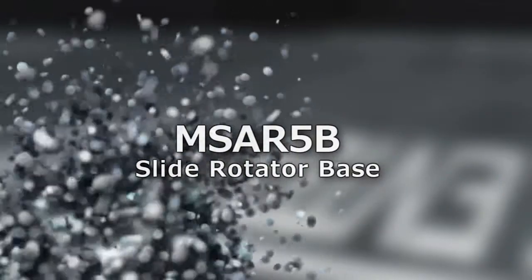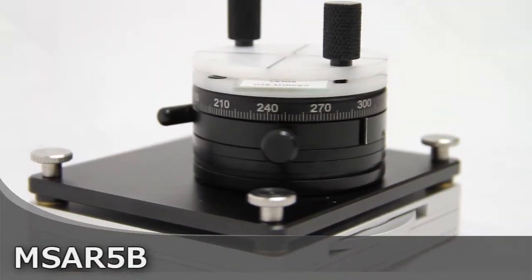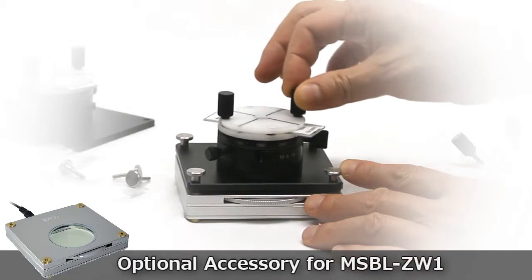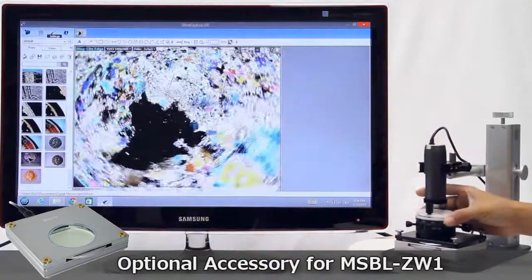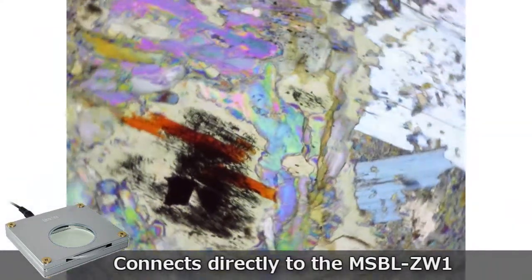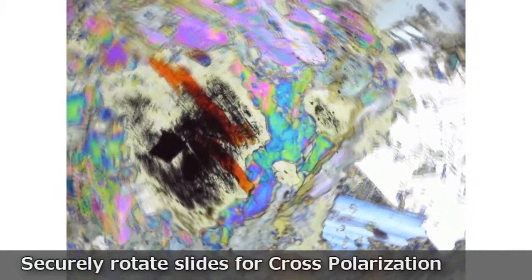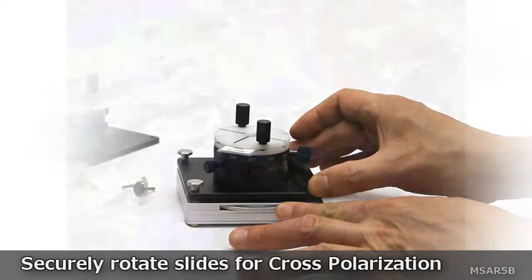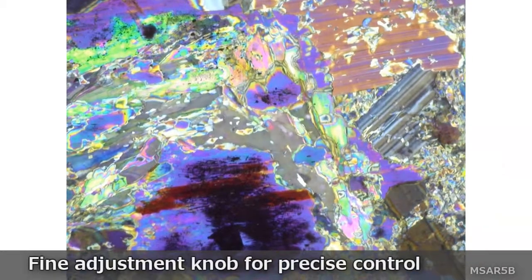Introducing the MS-AR5B Rotating Stage, an optional accessory for the MS-BL-ZW1 Polarizing Backlight. The MS-AR5B allows users to easily and securely rotate a slide on top of the MS-BL-ZW1 for polarization viewing purposes.